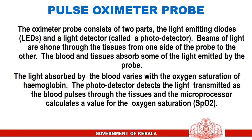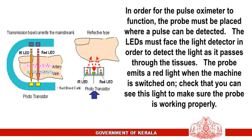Beams of light are shown through the tissues from one side of the probe to the other. The blood and tissues absorb some of the light emitted by the probe. The light absorbed by the blood varies with the oxygen saturation of hemoglobin. The photo detector detects the light transmitted as the blood pulses through the tissues, and the microprocessor calculates a value for oxygen saturation. In order for the pulse oximeter to function, the probe must be placed where a pulse can be detected. The LEDs must face the light detector to detect the light as it passes through the tissues. The probe emits a red light when the machine is switched on — check that you can see this light to make sure the probe is working properly.